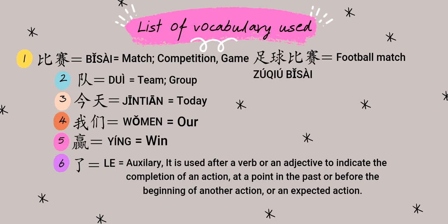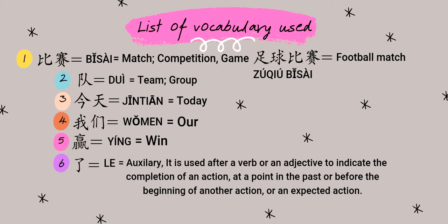了 (le) is an auxiliary word. When it is used after a verb or an adjective, it indicates the completion of an action. So yíng means 'to win,' but yíng le means 'won' — the action of winning the match has been completed. The people involved have completed the action of winning the match.